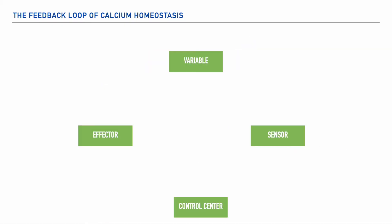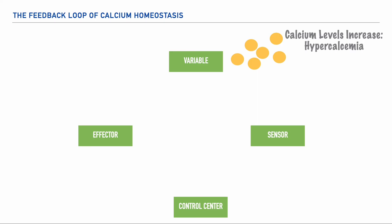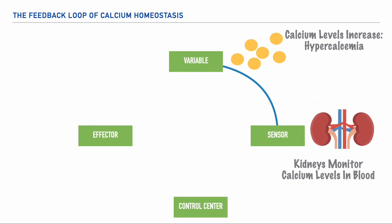Now let's imagine in another example that we have someone who has been over consuming or over supplementing their diet with large amounts of calcium. It would be plausible for them to be in a state of hypercalcemia, which means high amounts of calcium. In this example, the increased amounts of calcium represent the variable, and this increase is going to be sensed by the kidneys, which relay the message to the brain.